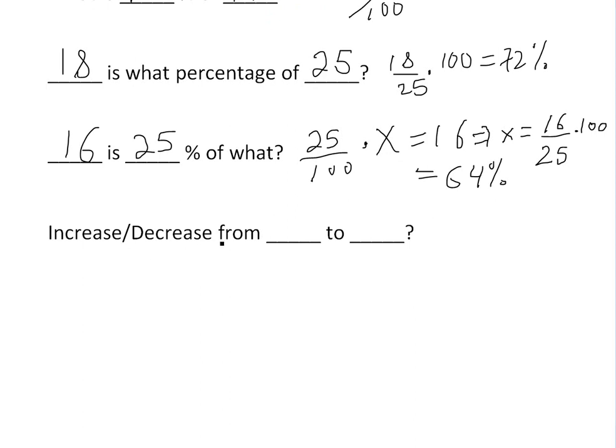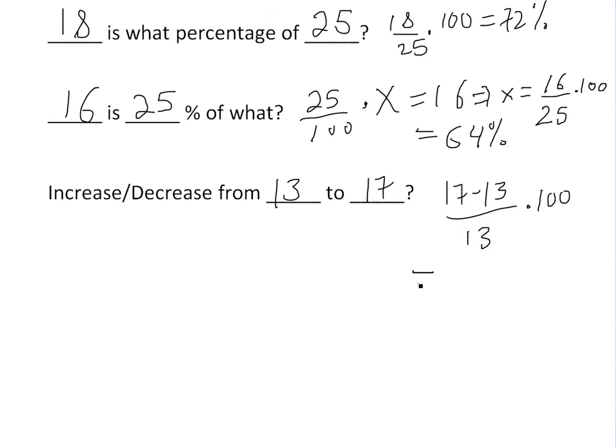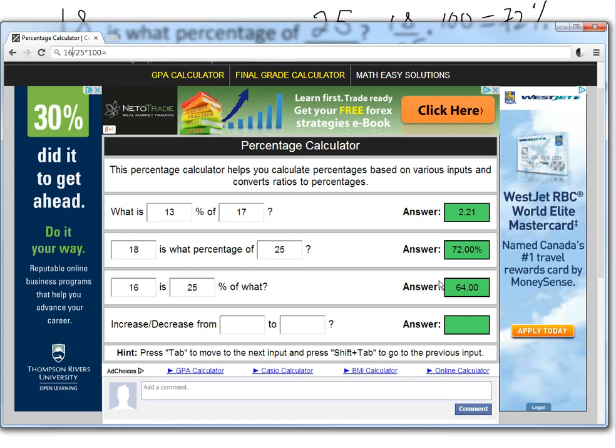Now the last one: increase or decrease from a number. Let's say you want to go from 13 to 17—what is the percent increase? If you were to calculate this one out, this is an increase, and it's going to be 17 minus 13 divided by 13, and then you're going to have to times it by 100. That's the calculation you would have to do. Let's just plug it into the calculator.